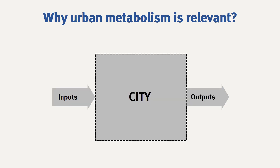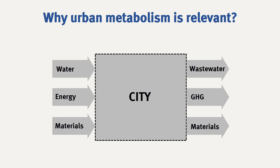Now that we have presented some shortcomings from traditional policies, let's have a look at how urban metabolism could help overcome them. Let's start with the simplest diagram of an urban metabolism — it just considers flows entering and exiting from a city. This type of simplistic representation is what is used for traditional policies. By subdividing the flows entering and exiting cities, it is possible to see a number of challenges simultaneously.